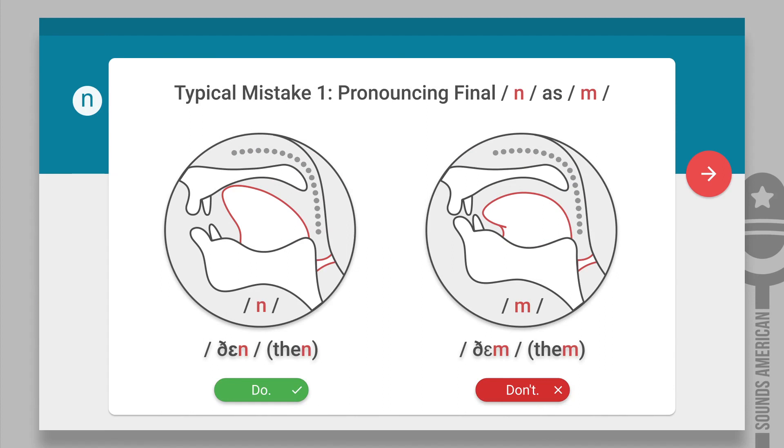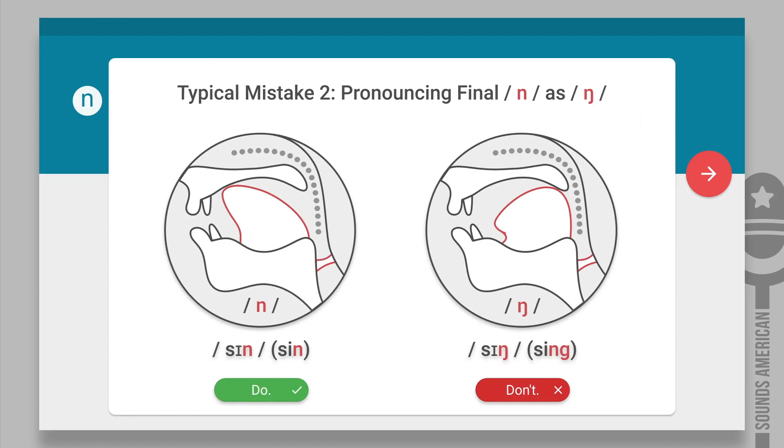The n is often confused with the m sound. For example, then, them. Also, the n is confused with the ng sound. Compare: sin, sing.